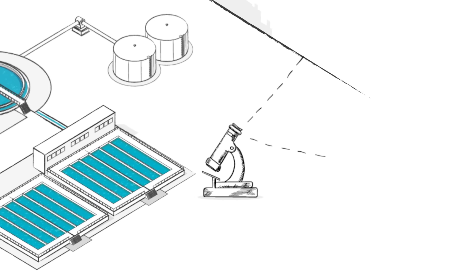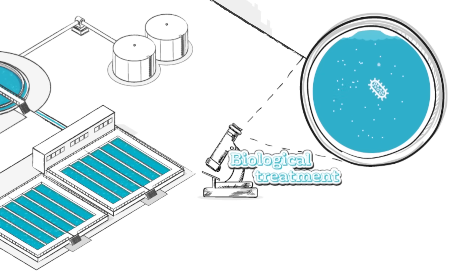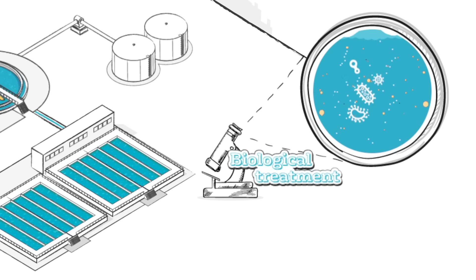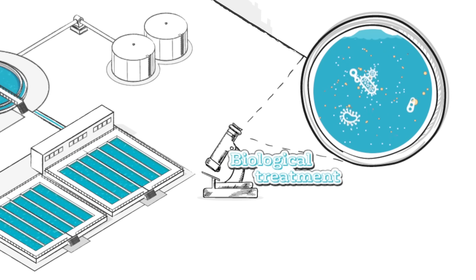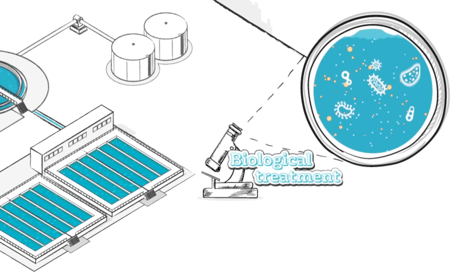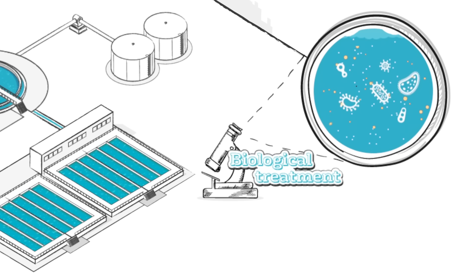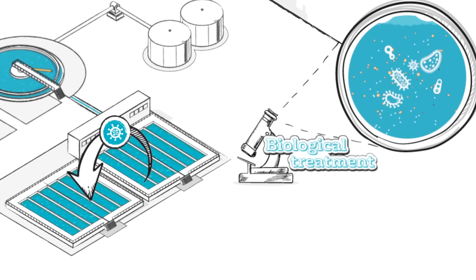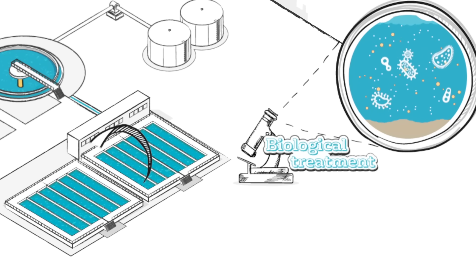Following this, the partially treated water begins biological treatment. Microscopic organisms that naturally occur in the wastewater break down the organic material. Air is pumped into the aeration tanks to encourage the bugs to reproduce and consume the organic material. The newer bugs go back to the aeration tank to live out the rest of their life cycle.